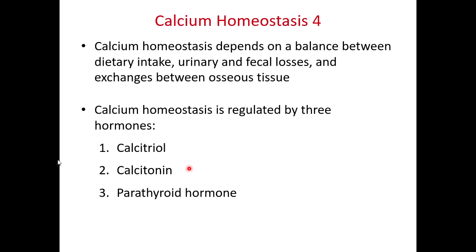There are three hormones we primarily use to regulate blood calcium concentrations: calcitriol, calcitonin, and parathyroid hormone. The dynamic equilibrium of calcium in our bodies involves dietary intake, urinary and fecal losses, and whether we store it in bones or have it available in soft tissues.